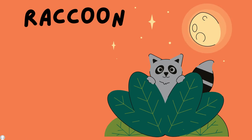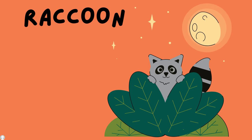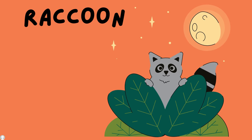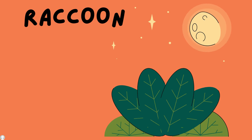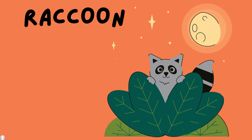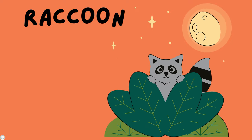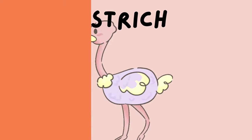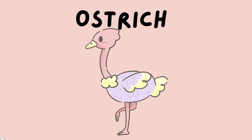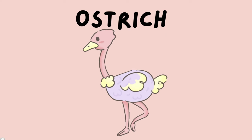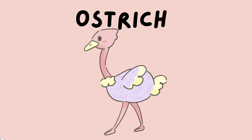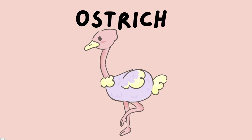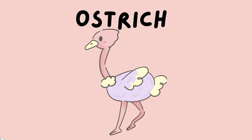Raccoons. Raccoons eat small animals and vegetables including fruits to survive. Ostrich eats fish and veggies to survive.